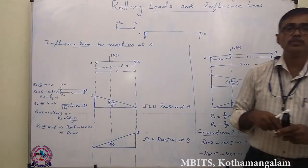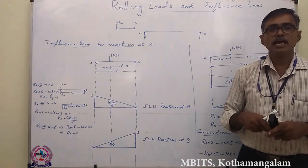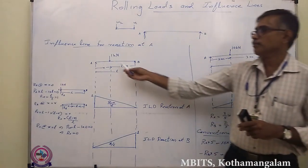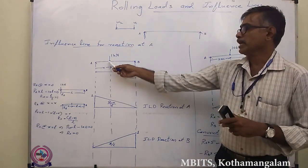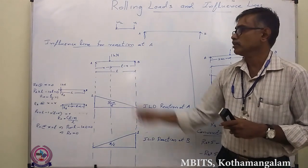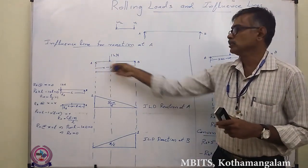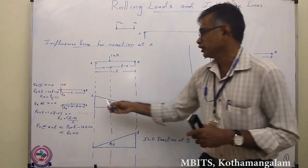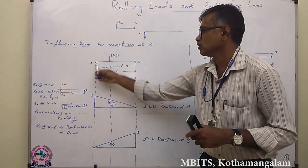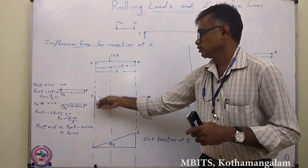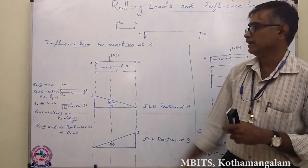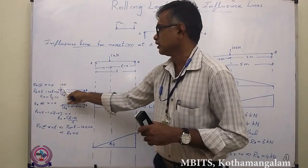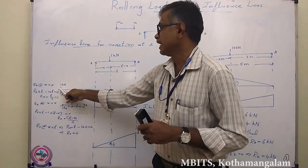We will learn how to draw the influence line diagram for the reaction and then calculate the support reaction from it. Considering beam AB, to draw the influence line diagram, we move a unit load from one end of the beam to the other. We are going to draw the influence line diagram for the reaction at A. For that, we place the unit load of 1 kN at point A.